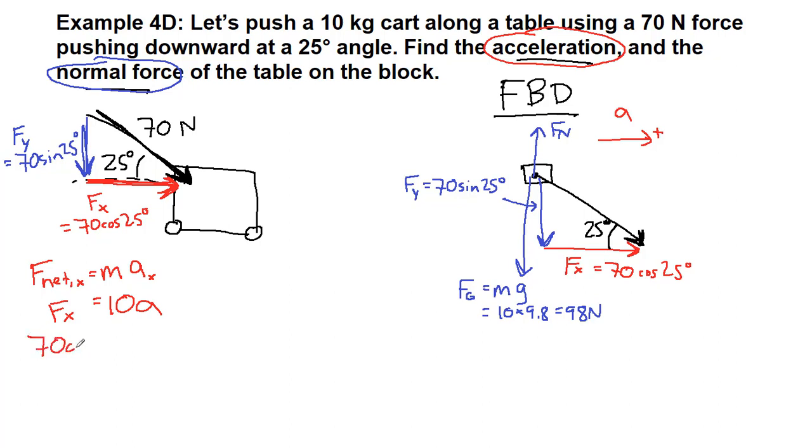So we have 70 cosine 25 degrees. If we divide both sides by 10 we have acceleration all by itself and we can solve for that. 6.34 meters per second squared.